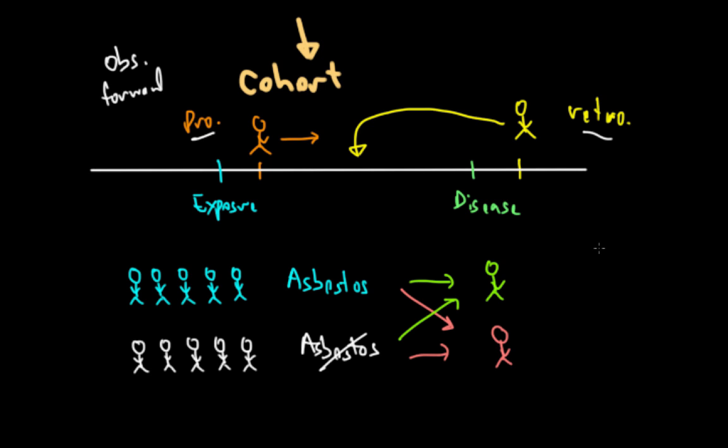In terms of advantages and disadvantages of cohort studies: on the pro side, you can determine causality because exposure precedes disease, and you can study multiple diseases at once to see which exposures lead to what diseases. On the other hand, prospective studies generally last a long time, so they can be costly and time-intensive, and they're inefficient for rare diseases or ones that take a long time to develop. They're also specifically prone to loss to follow-up bias, since you may lose track of participants or have them drop out over time.